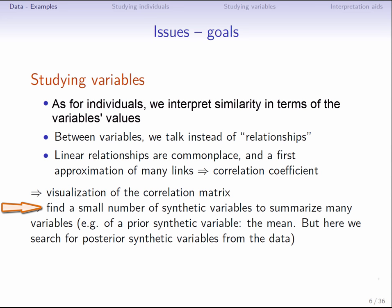In our example, the correlation matrix brings together the 351 correlation coefficients, so trying to group variables using the correlation matrix would be rather tedious. The average itself is a synthetic variable, but this is defined a priori. Here, we want to define indices from the data, so a posteriori.